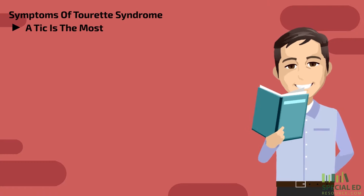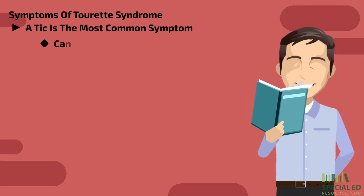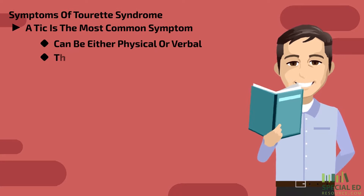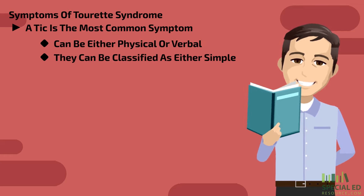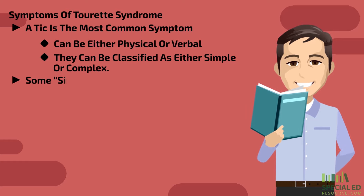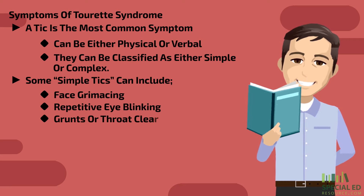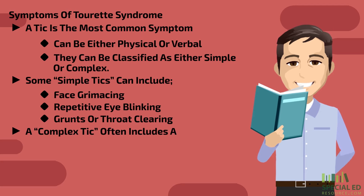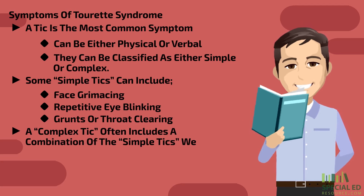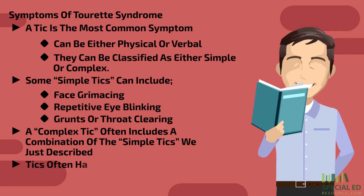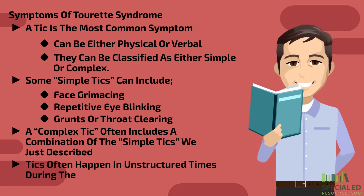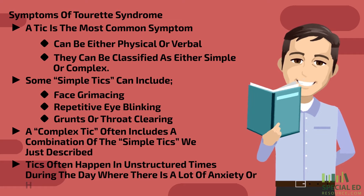Now let's discuss some of the common symptoms. The most common symptom of TS is what's called a tic. They can either be physical or verbal, and they can be classified as either simple or complex. Some simple tics can include face grimacing, repetitive eye blinking, and grunts or throat clearing. A complex tic often includes a combination of two or more simple tics. Tics often occur at unstructured times during the day where there is a lot of anxiety or high stress.